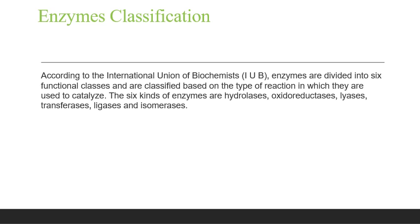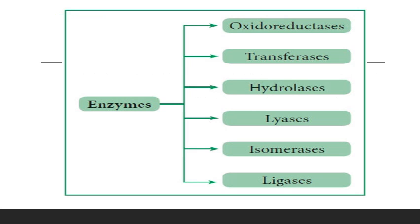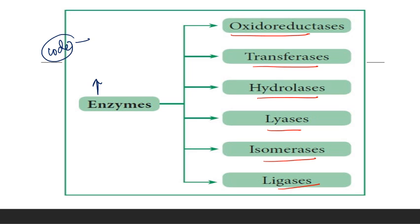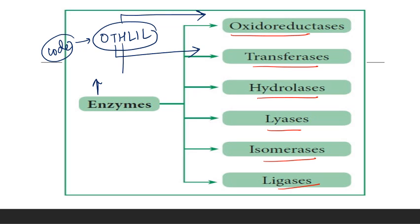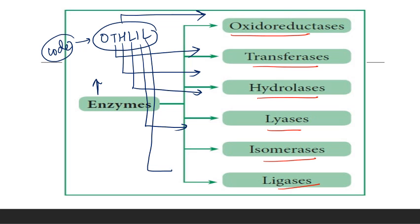Enzyme classification: enzymes are basically divided into six classes. The mnemonic code for this is OTHLIL — O stands for oxidoreductase, T stands for transferase, H stands for hydrolases, L stands for lyases, I stands for isomerases, and L stands for ligases.